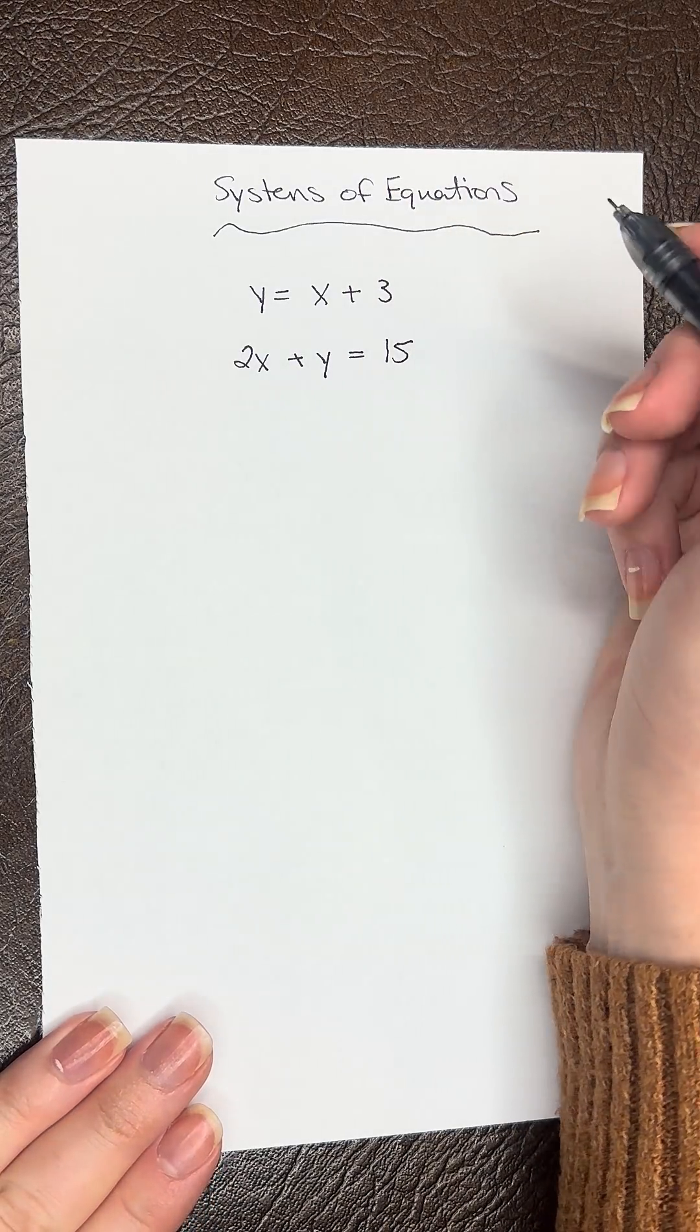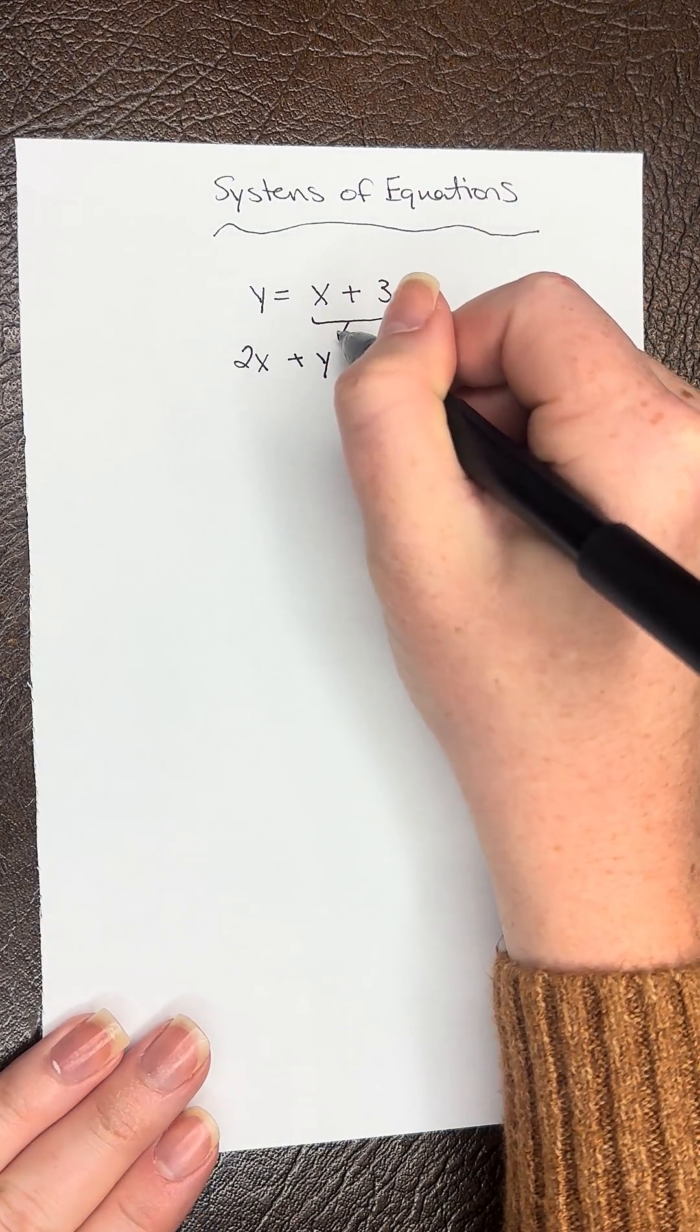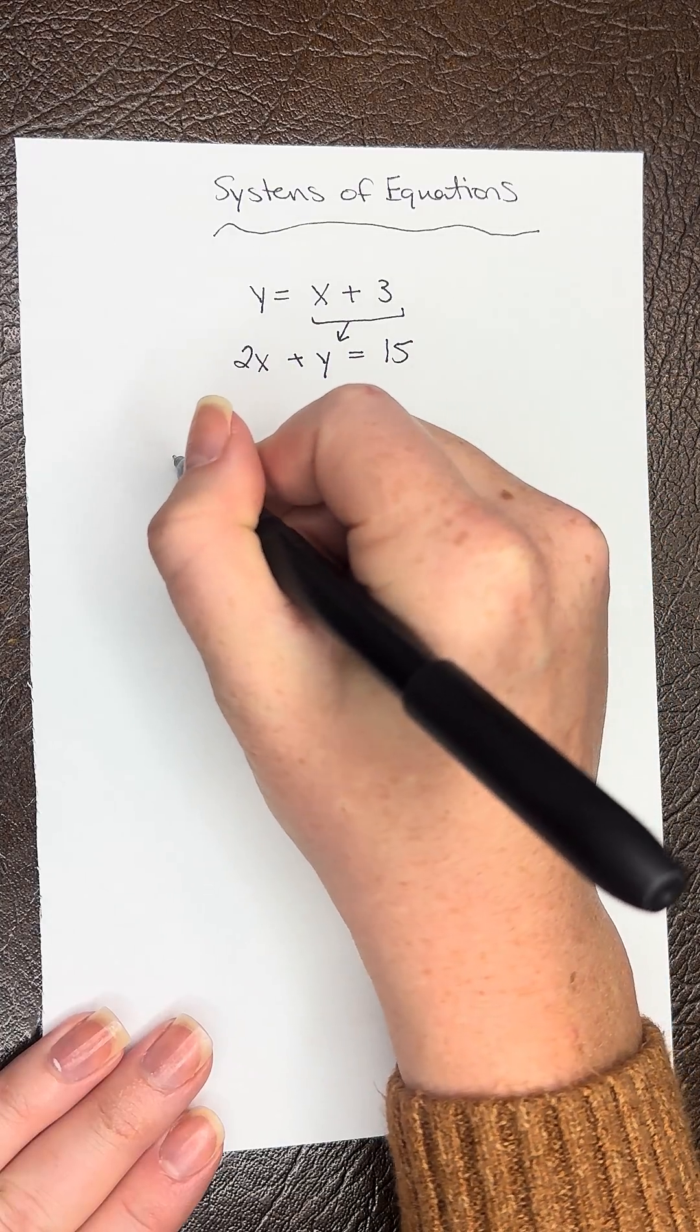So we want to get everything in terms of one variable, so we can plug in x plus 3 for y in the second equation and do a rewrite.